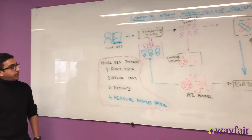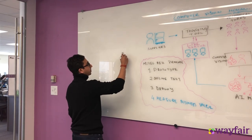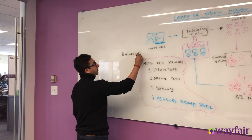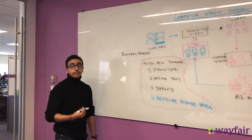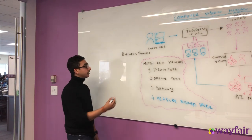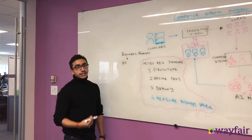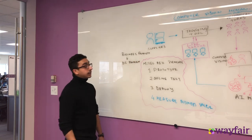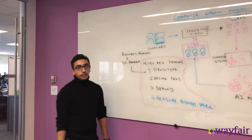Even before we think about building a model, the first thing we want to look at is what is the business problem that we are trying to solve. Always try identifying a business problem that has direct impact. Once you have identified a business problem, the next piece is to break this problem down into a data science problem. For us in computer vision, we break it down into a computer vision problem. Once you've done that, the next piece is to prototype — get some data and start prototyping. That's where we get to the first stage of model development.